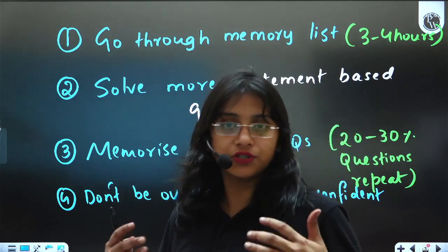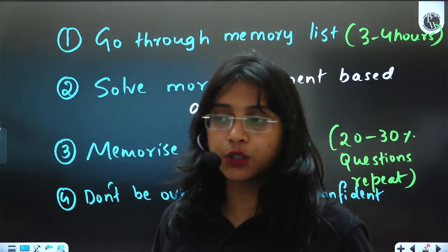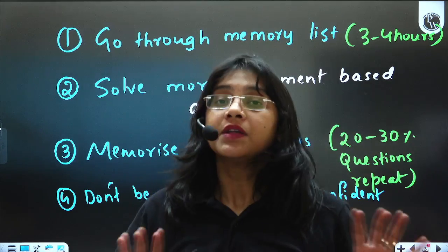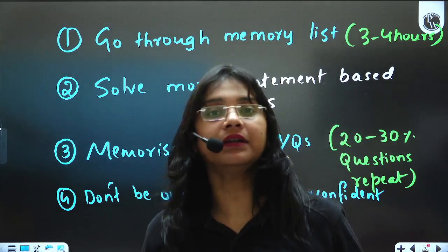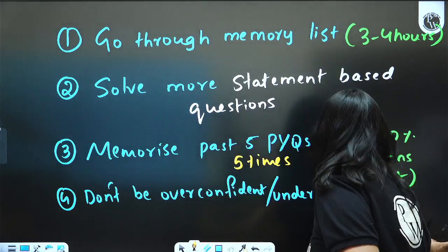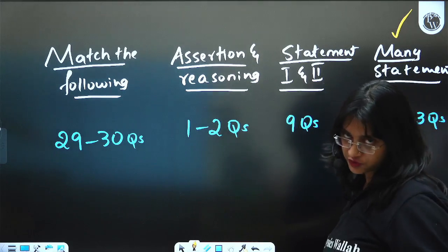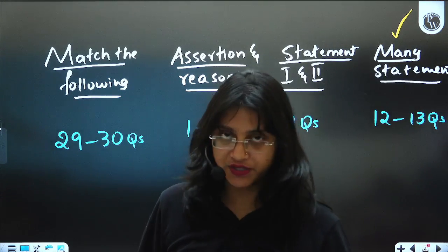So you shouldn't be underconfident because this is the number of distribution of the questions.